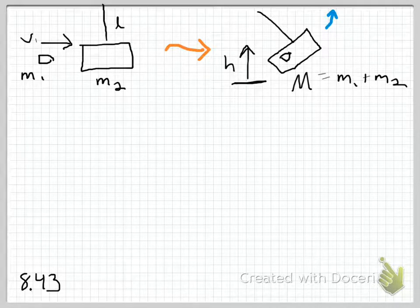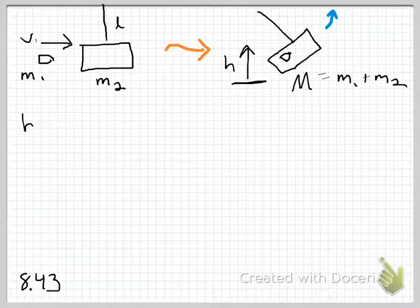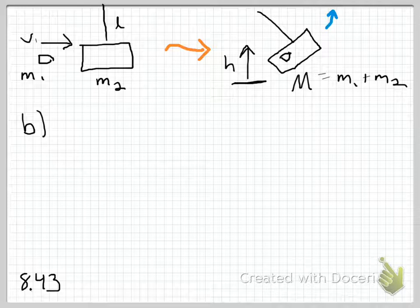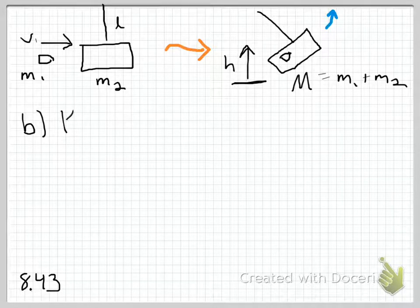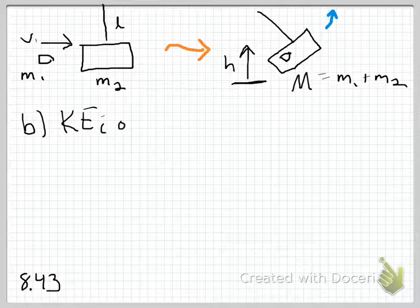Part B asks the initial kinetic energy of the bullet, and Part C, the kinetic energy of the bullet and pendulum immediately after the bullet becomes embedded. So I'm not going to solve these in order, because I think Part A is easier to solve if you solve it last.